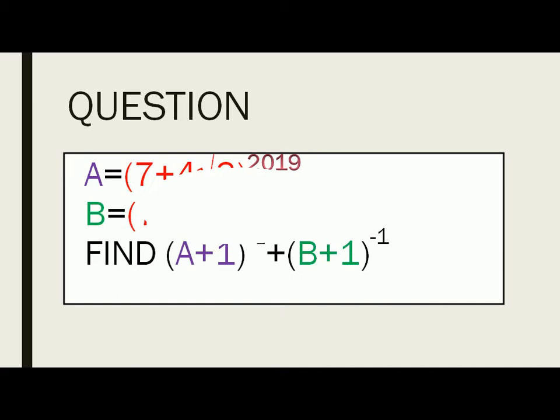The question says that you have two unknown quantities. Means you can say them to be known quantities A and B. The value of A is given which is 7 plus 4 into root 3 whole raised to the power 2019.